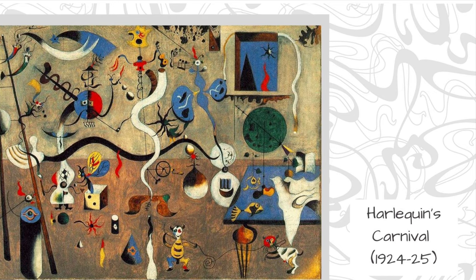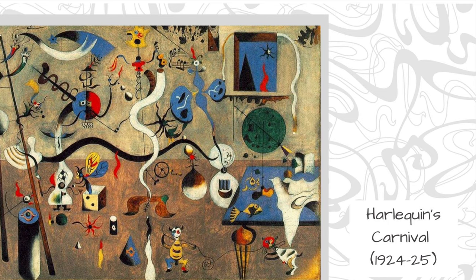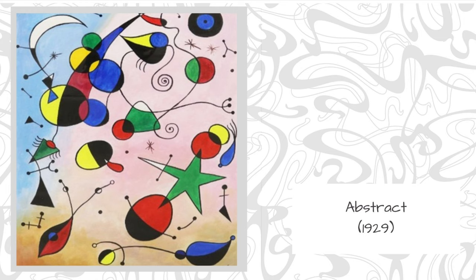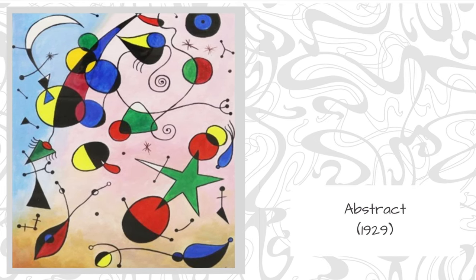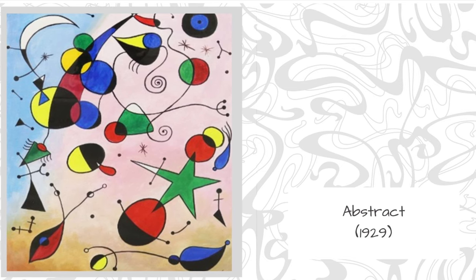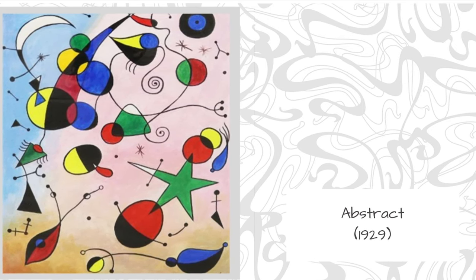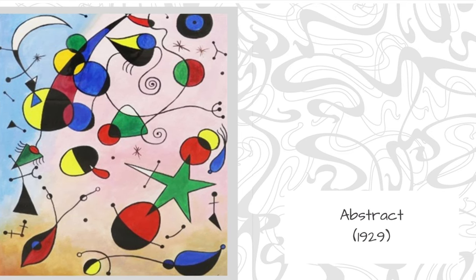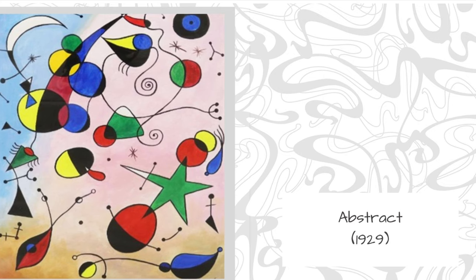Miró also used a lot of signs and symbols in his work to represent different things. As the title of this work suggests — Abstract — it is totally abstract, which means it is non-representational. Miró was not trying to draw or paint a picture of anything in particular, but was just drawing from his subconscious mind.